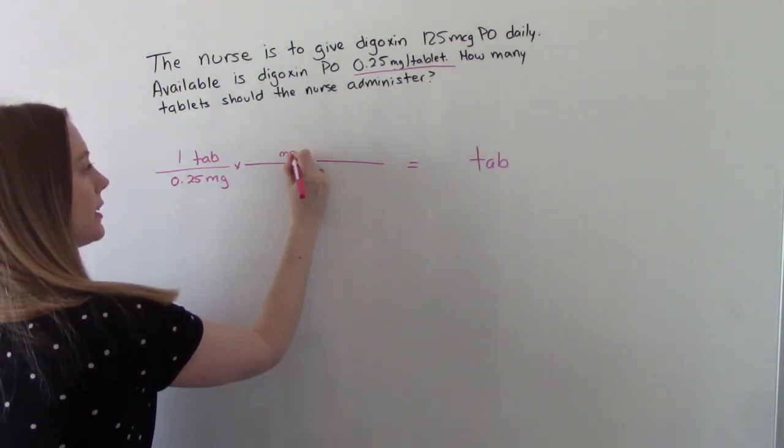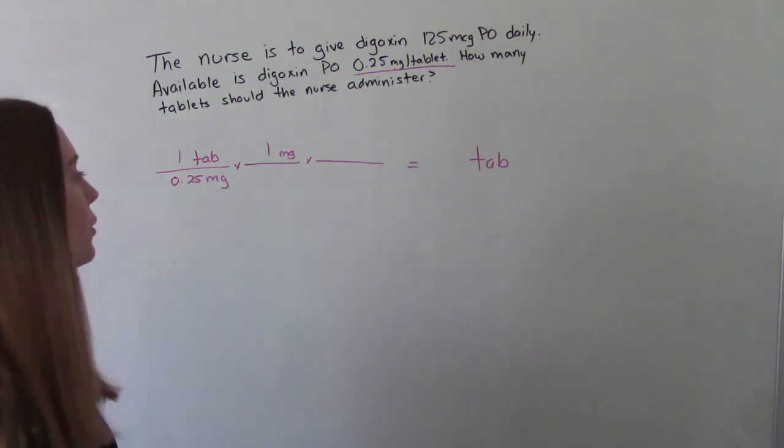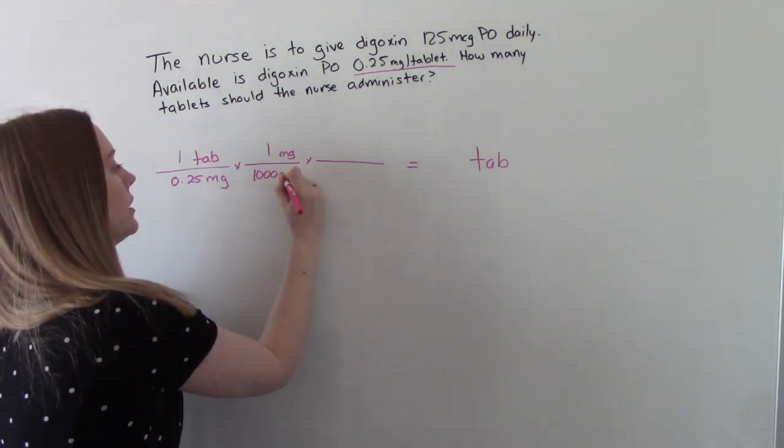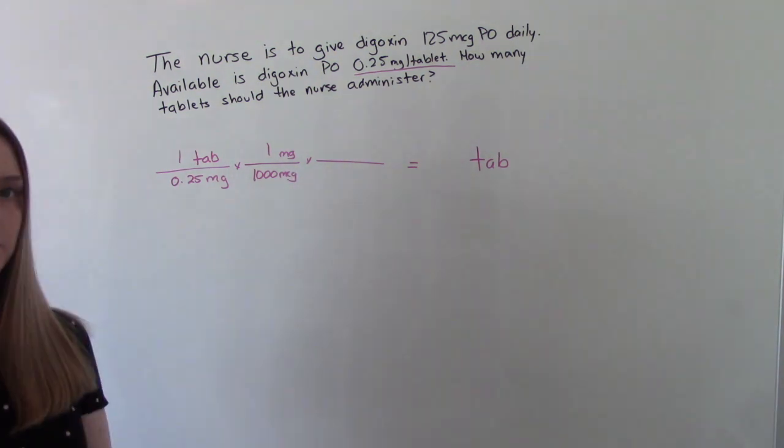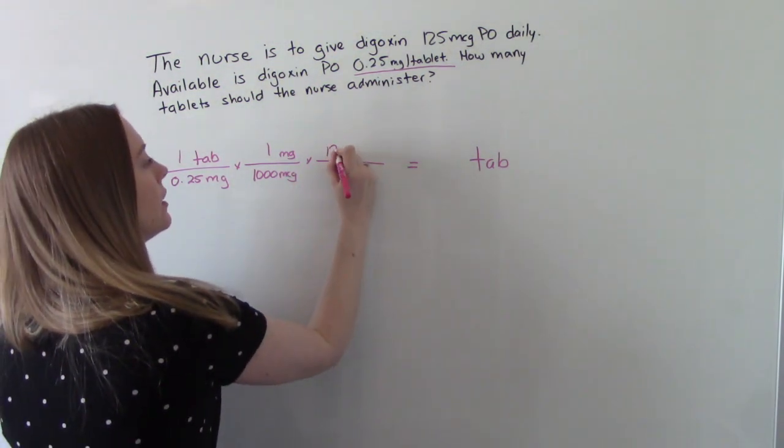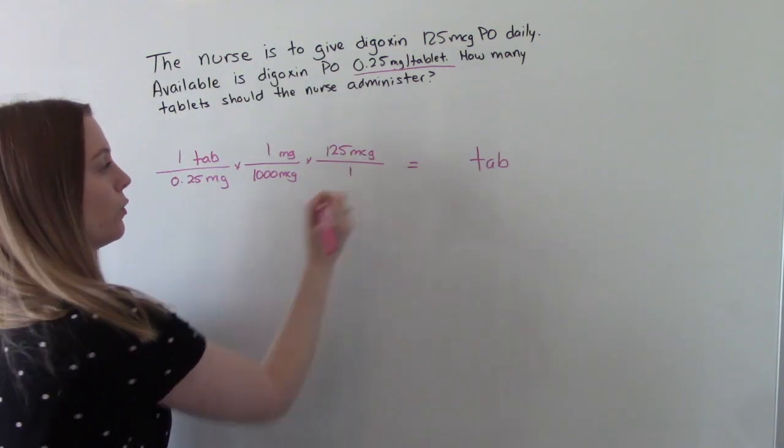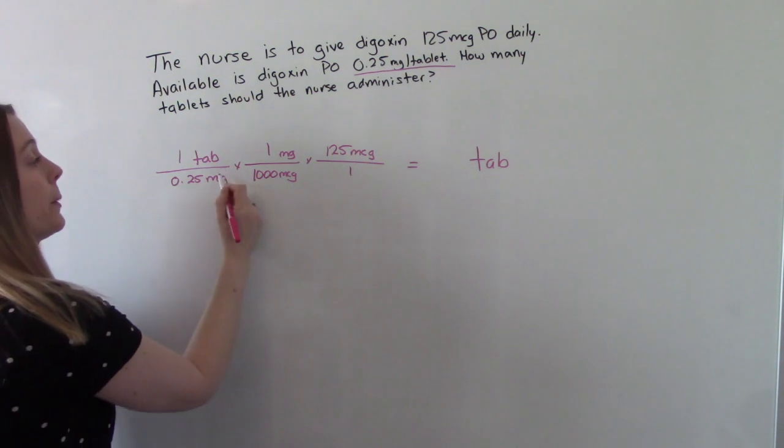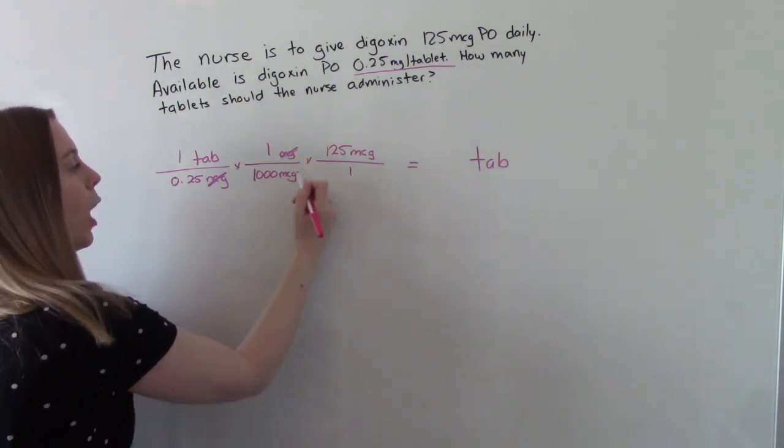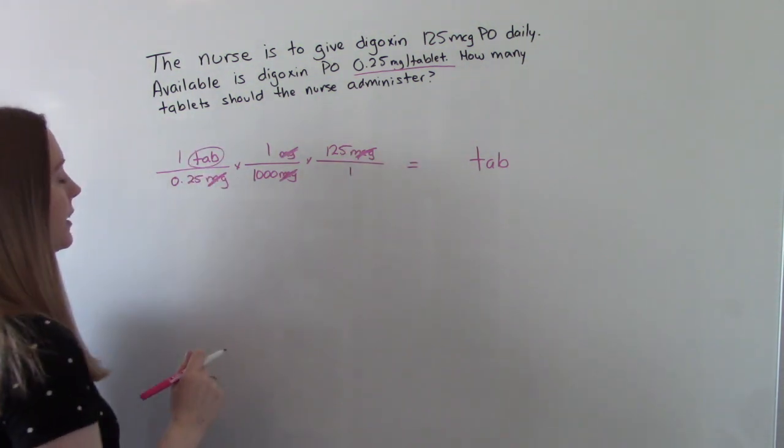So we'll put milligrams on the top so that they'll be able to cancel later on. One milligram is the same as 1,000 micrograms. And then what do we want to give? 125 micrograms over one. So our milligrams will cancel. Our micrograms will cancel. That'll leave us only with tablets, which is what we wanted in our answer.